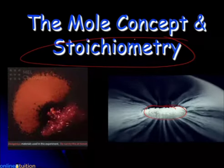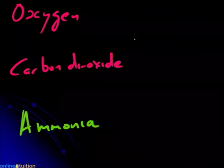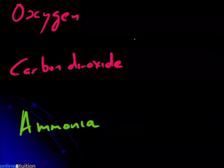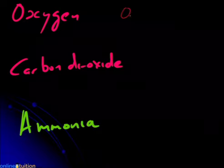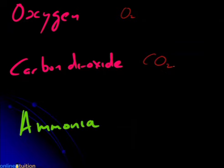Some quick revision: what's the formula for oxygen? O2 — correct. Oxygen in the atmosphere exists as a diatomic gas, so the formula is O2. Someone said carbon dioxide is CO2. Now, anyone know the formula for ammonia? You may have come across it in household cleaning products.